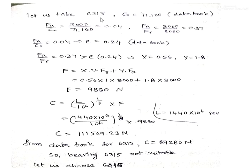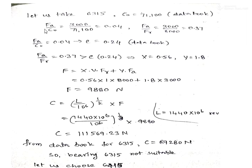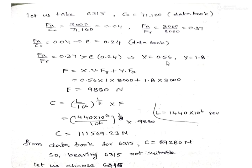For the 6315 series with shaft diameter 75 mm, the C₀ value from the data book is 71,100 N. Substituting, F_A/C₀ = 3000/71100 = 0.04, and F_A/F_R = 0.37 as before. Against F_A/C₀ = 0.04, the E value is 0.24. Since F_A/F_R = 0.37 is still greater than E, X = 0.56 and Y = 1.8. Substituting in the equivalent load formula gives F = 9880 N.